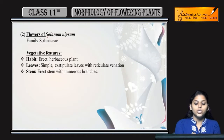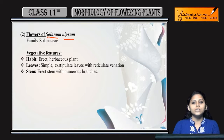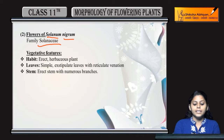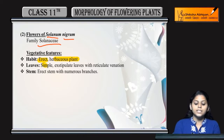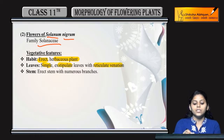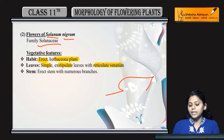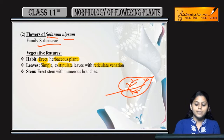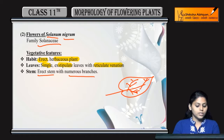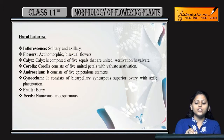Next is the flower of Solanum nigrum, which belongs to family Solanaceae. Vegetative features: they are erect herbaceous plants. Leaves are simple, exstipulate with reticulate venation, meaning branch-like venation. Stem is erect with numerous branches.